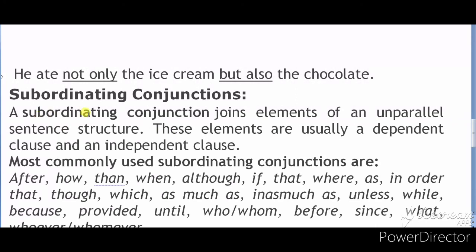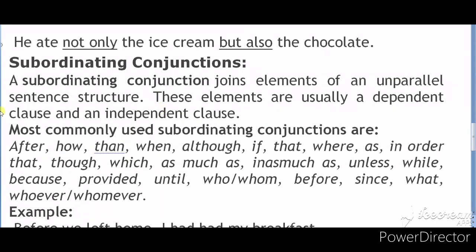Next example: 'He is not only...' — here 'not only' is your conjunction, and 'but also' follows. So the full sentence is: 'He ate not only the ice cream but also the chocolate.' Here 'not only...but also' is the correlative conjunction.